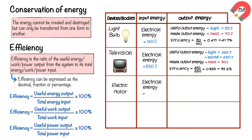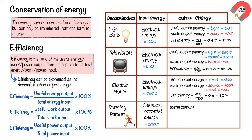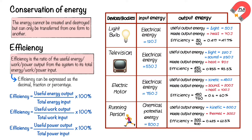Electric motor: electrical energy input is 750 Joules, useful output energy is 450 Joules for kinetic energy, and waste output consists of 200 Joules for sound and 100 Joules for thermal energy. Therefore, efficiency = 450 / 750 = 0.6, or 60%. Running person: chemical potential energy input is 800 Joules, useful output is 500 Joules for kinetic energy, and waste output is 300 Joules for thermal energy. Therefore, efficiency = 500 / 800 = 0.625, or 62.5%.